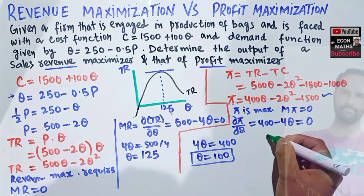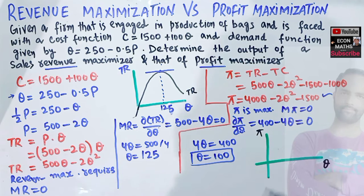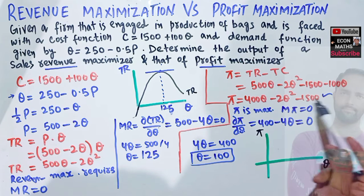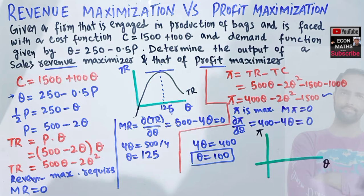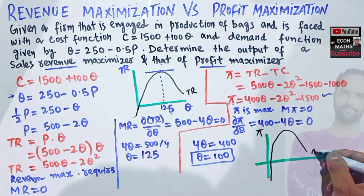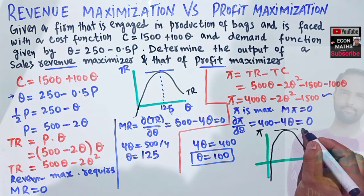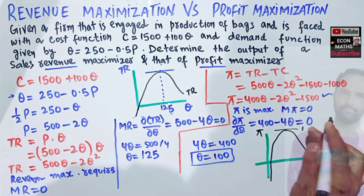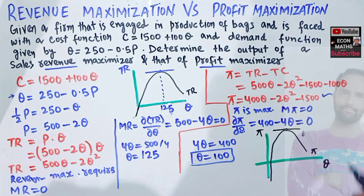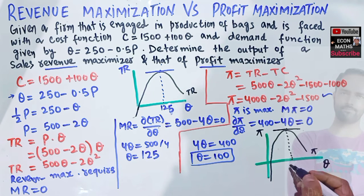Graphically, with output on the horizontal axis and profit on the vertical axis, the profit function has a y-intercept of −1500. The profit is maximized at the point where the slope of the profit function equals zero — that is, where marginal profit equals zero — and this occurs at q = 100. I hope this was clear. Thank you.